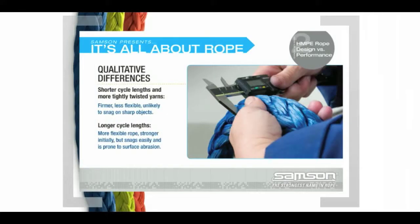Each of these ropes will have qualitative differences determined by the braid cycle length. Shorter cycle lengths and more tightly twisted yarns create a firmer rope that is unlikely to snag on sharp objects. Longer cycle length results in a rope that is stronger initially, but snags easily and is prone to surface abrasion that eventually compromises strength. The engineer's job is to arrive at a cycle length that balances these characteristics to produce a rope that is strong, easily handled, and resists abrasion when put to work.